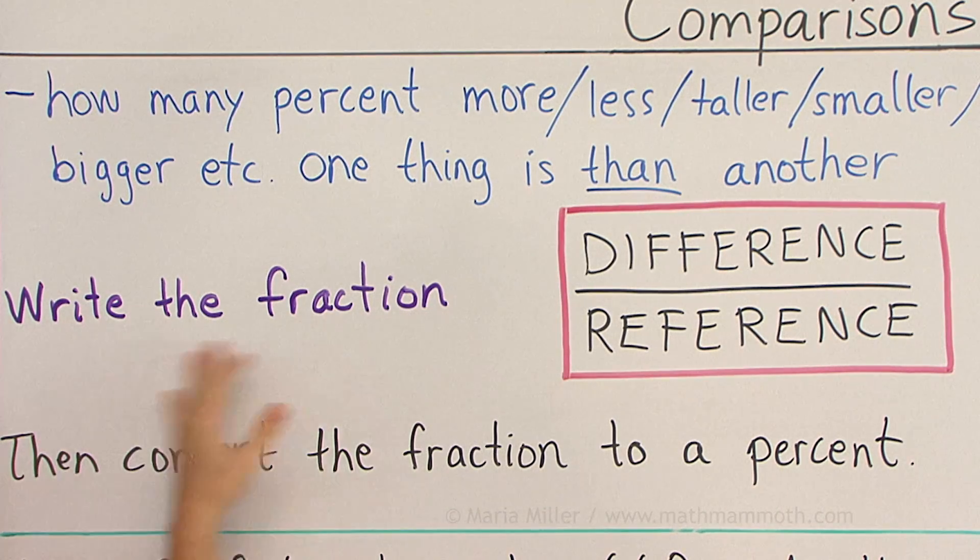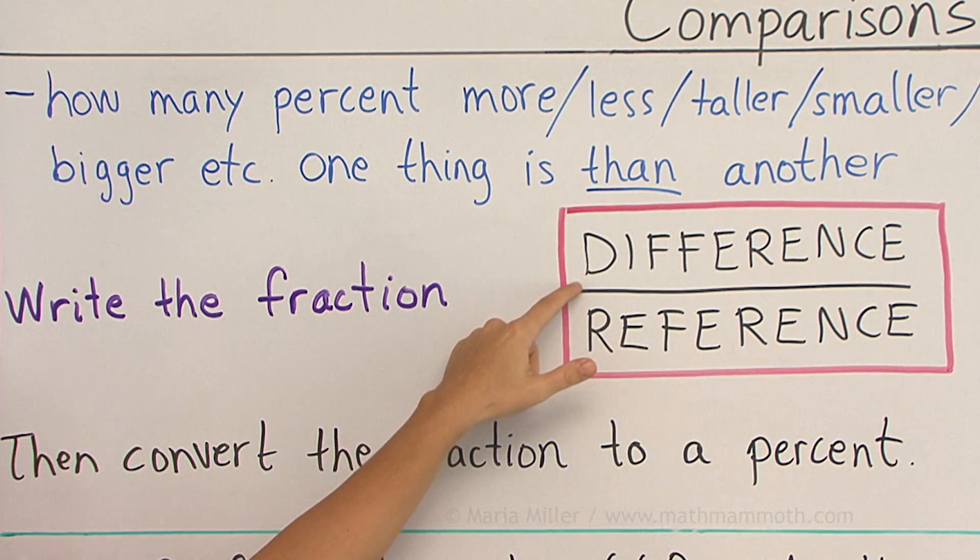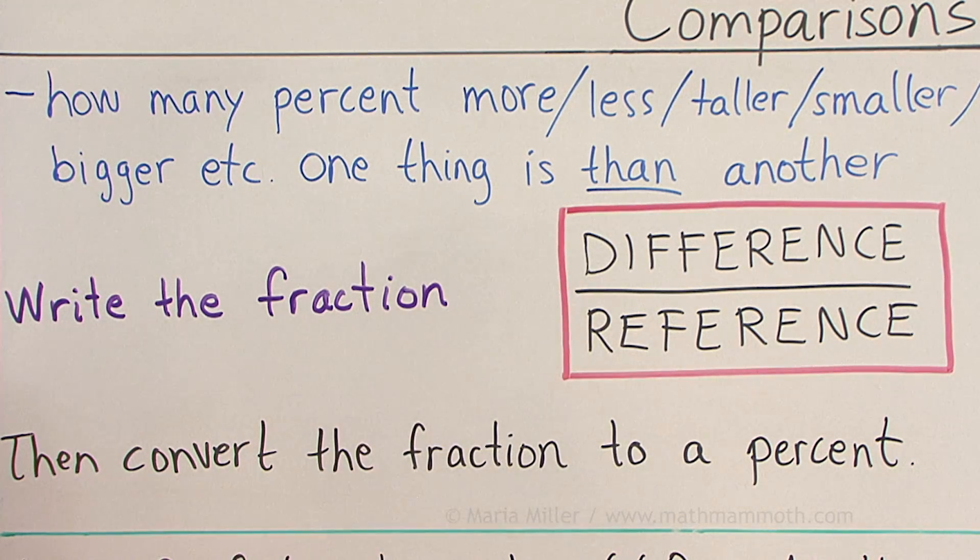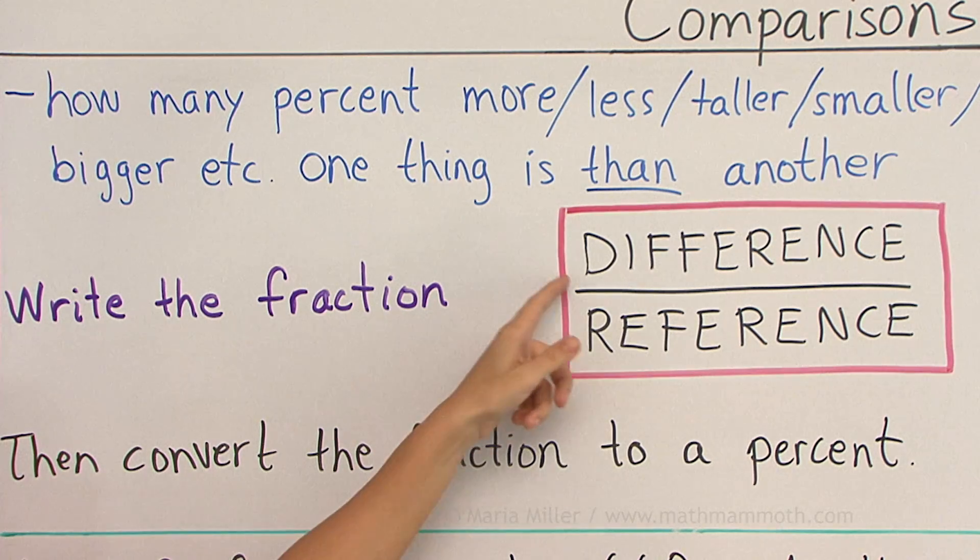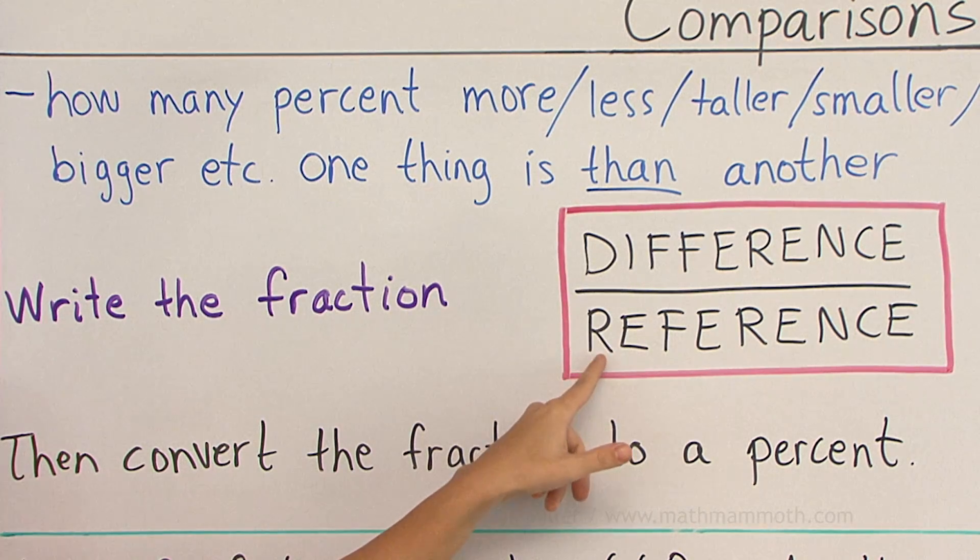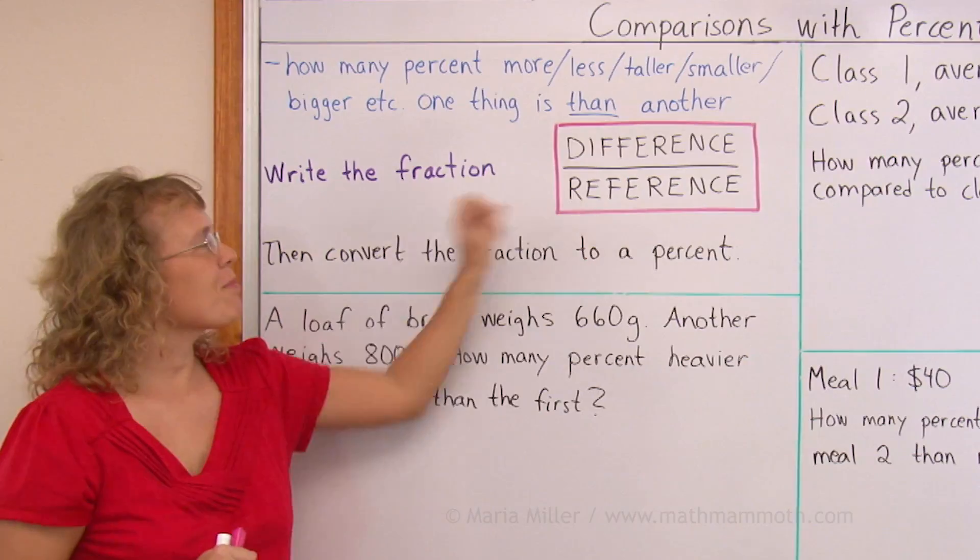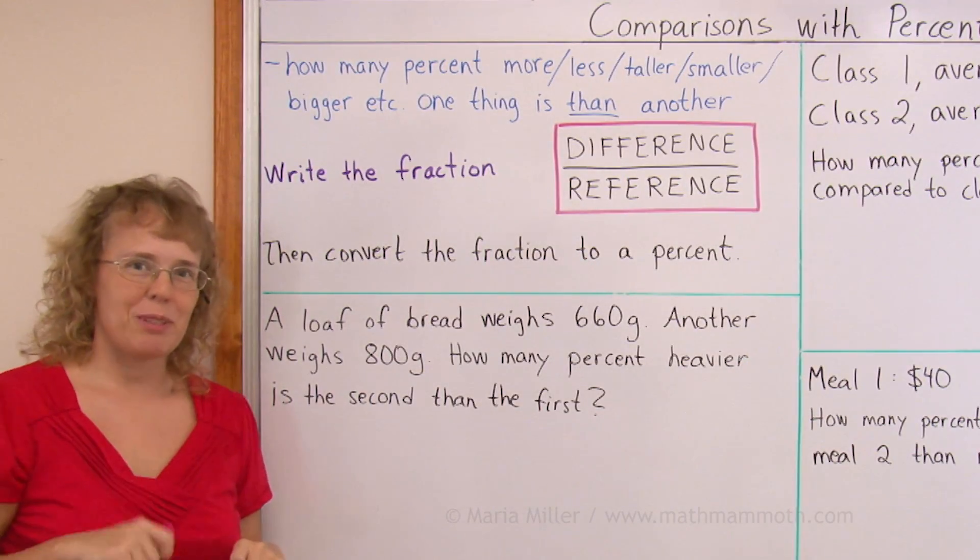And we do the same thing as with percent of change. We write this fraction. We figure out the difference, the actual amount, how much the one thing is bigger or smaller than the other, and then compare that to the reference item.